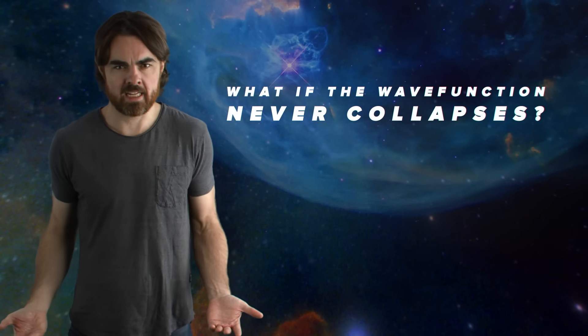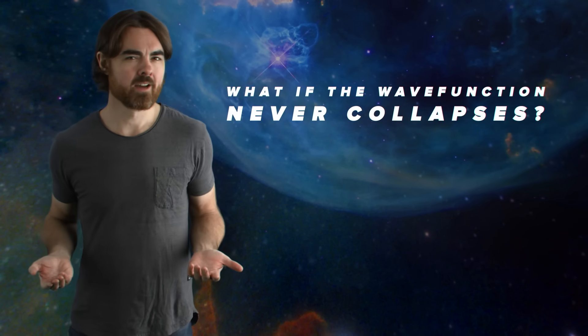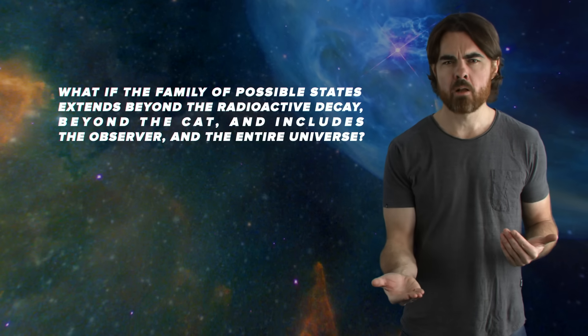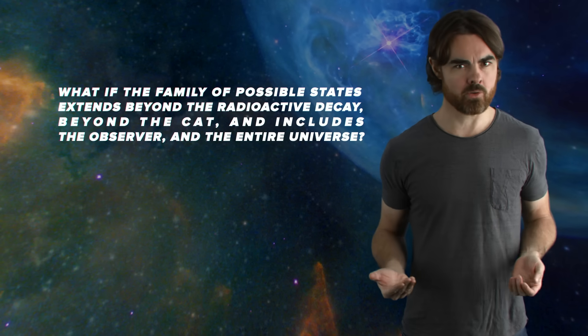If we can imagine a cat in a superposition of states, alive and dead, why stop at the cat? What if the family of possible states extends beyond the radioactive decay, beyond the cat, and includes the observer and indeed the entire universe too? If we open the box and find that the cat is alive, it's because we are part of an entire quantum timeline in which the radioactive decay and subsequent poisoning never happened. But there's an equally valid timeline in which it did, and another version of us experiencing that.